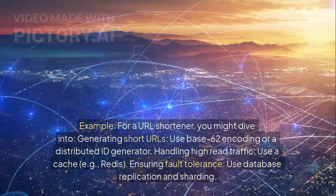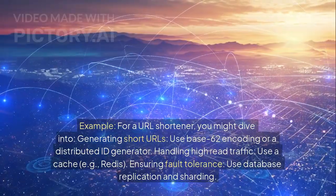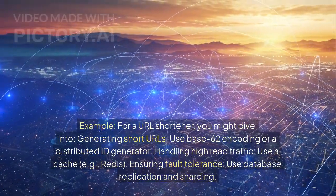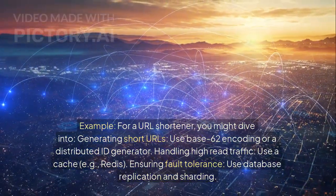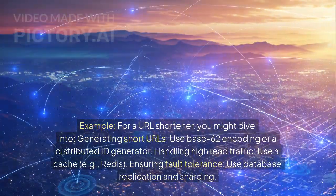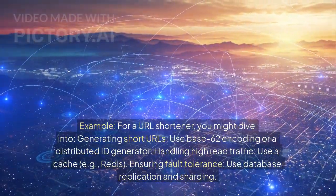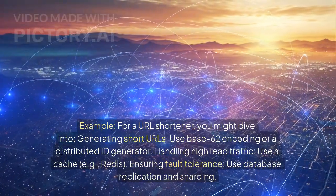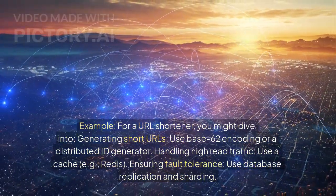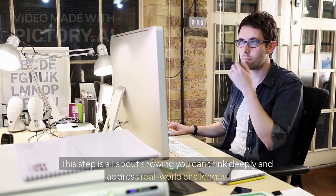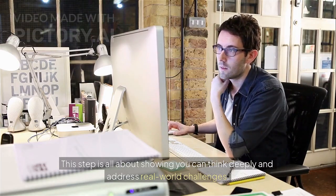For example, for a URL shortener, you might dive into: generating short URLs using base 62 encoding or a distributed ID generator; handling high-read traffic using a cache like Redis; and ensuring fault tolerance using database replication and sharding. This step is all about showing you can think deeply and address real-world challenges.